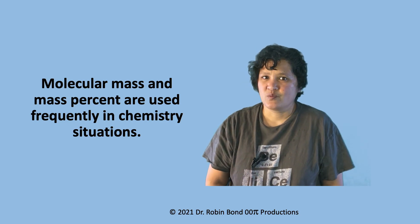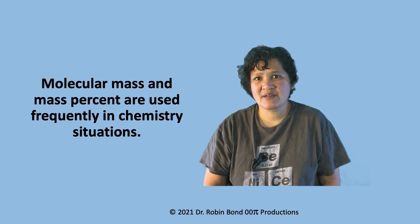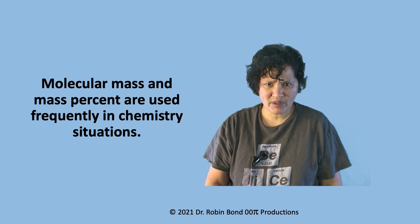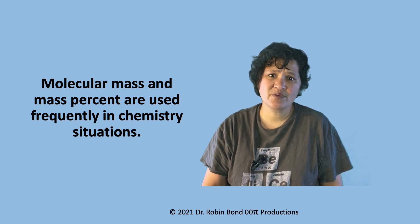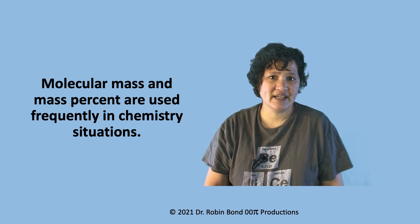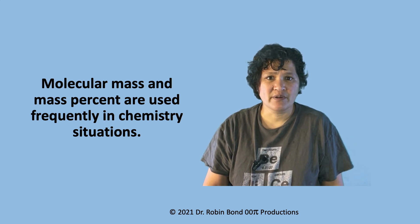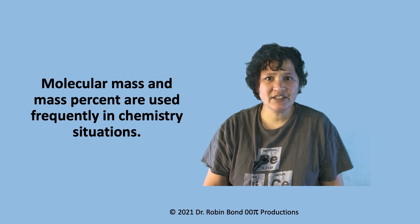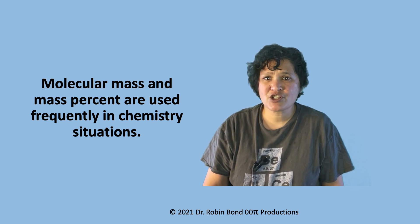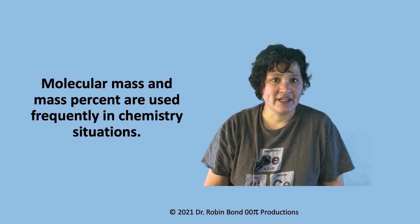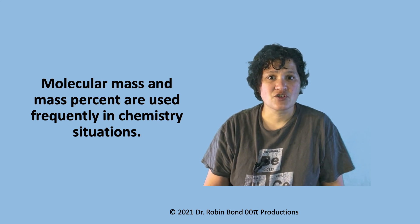Molecular mass — which is the molar mass of a compound — is something you'll be using an awful lot in chemistry. Mass percent is also used frequently to indicate compositions. We're going to use both of these in our next video, in which we talk about how to derive empirical and molecular formulas from information on the composition of a molecule. I hope this was helpful, and I look forward to seeing you again soon.